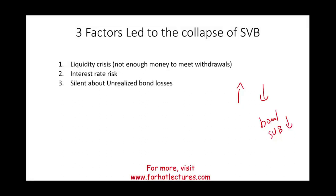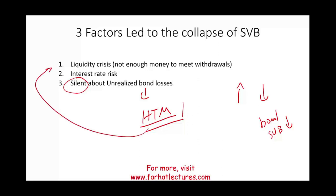No one reported those losses because they were on bonds classified as held to maturity — they were hidden under that category. When the losses occurred, they did not have to be reported. But when the bank faced the liquidity crisis, they had to sell the bonds and the losses were realized, leading to the collapse of Silicon Valley Bank.